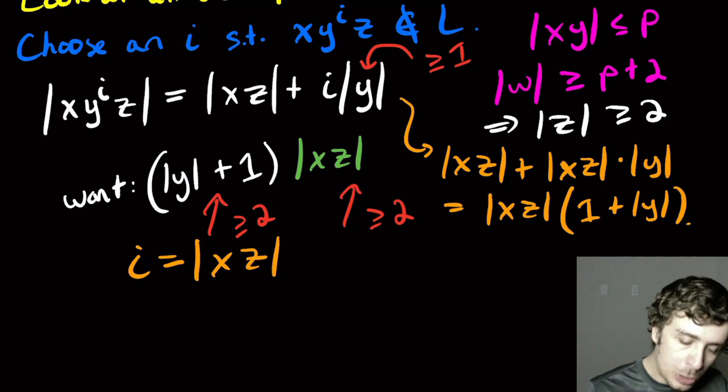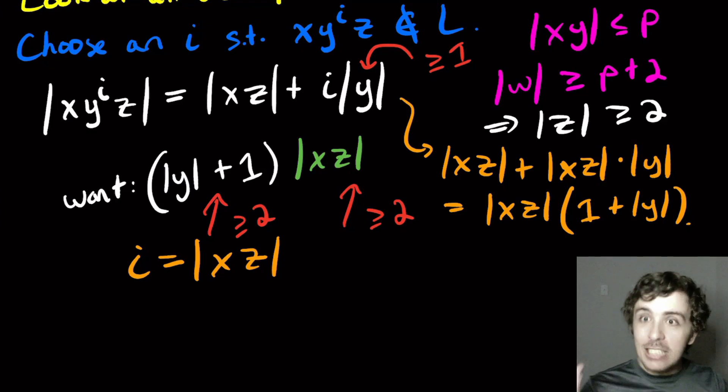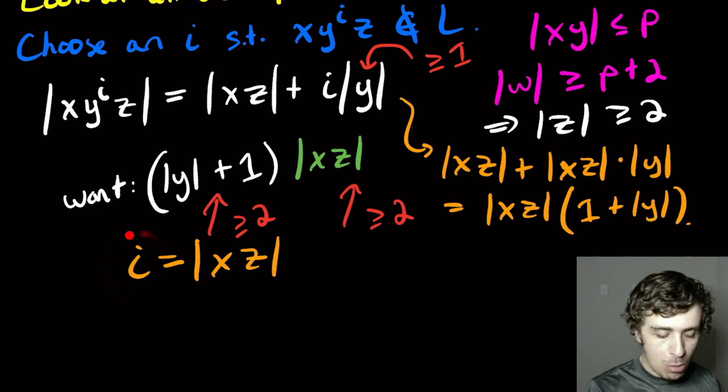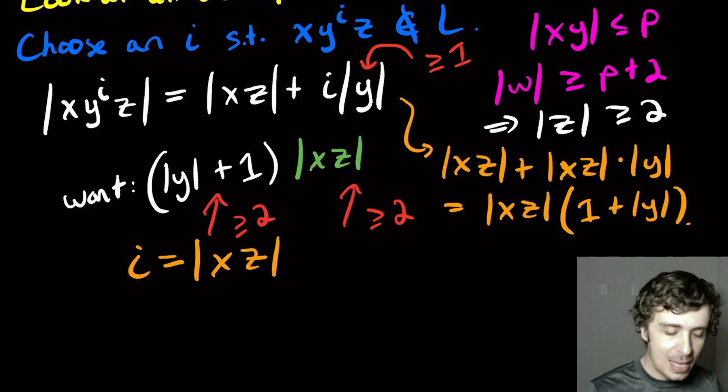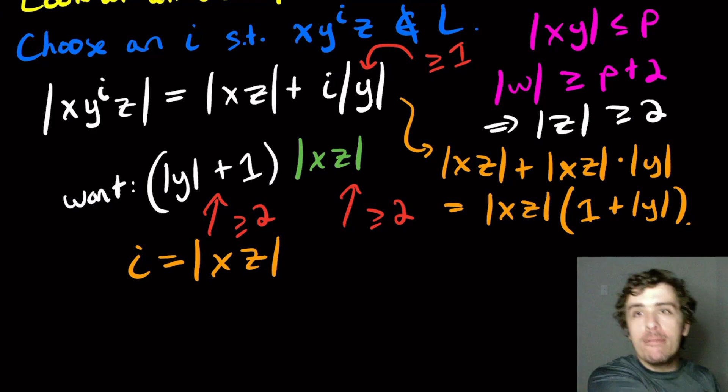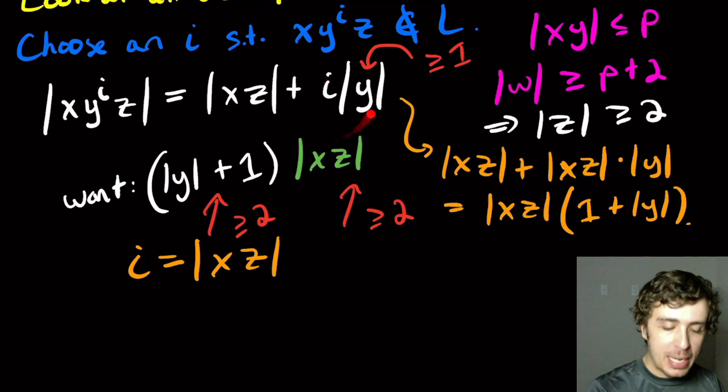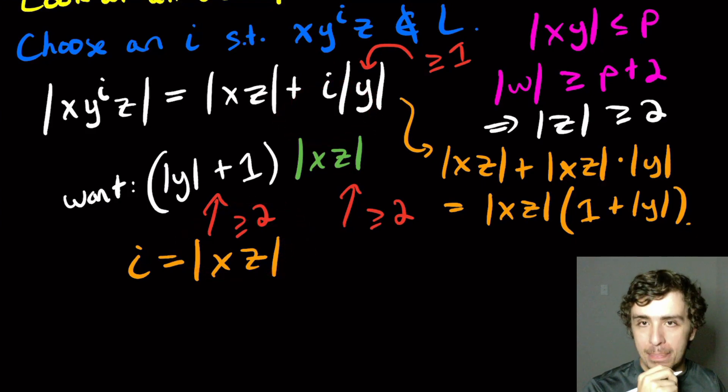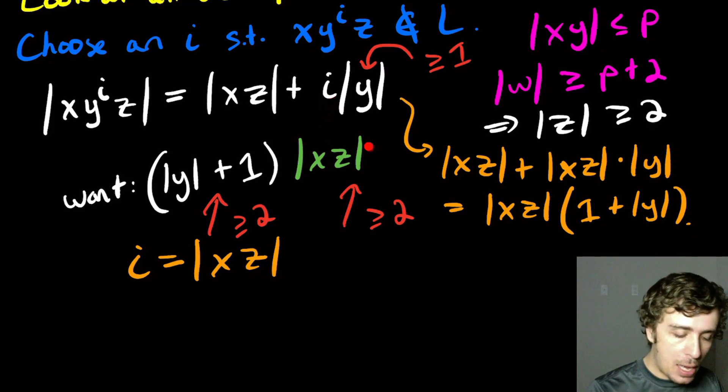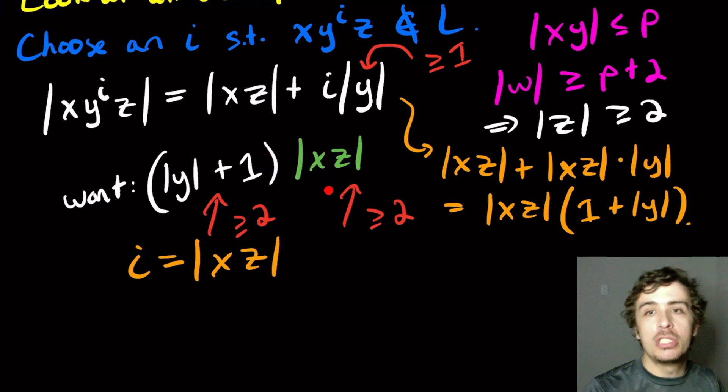This is an interesting example of the pumping lemma in that the value of i that you pick depends on the decomposition, but that's okay. As long as you find some value of i for which you get out of the language, and we did, that's all that's needed.